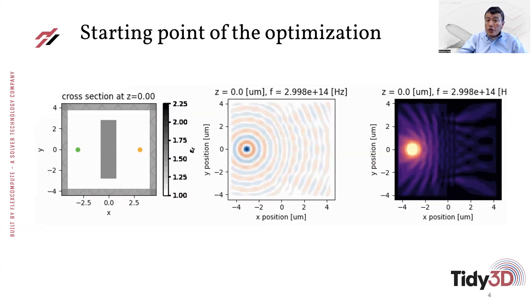So here is the starting point of the optimization. In this case, we simply put a dielectric slab between the source and the monitor. And here we choose the permittivity to be 1.625, which is halfway between 1, which is vacuum, and 2.25, which is a reasonable value for glass.